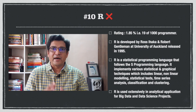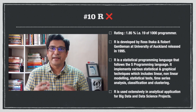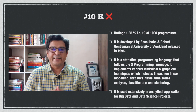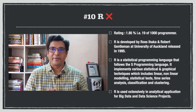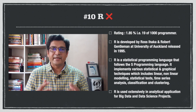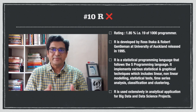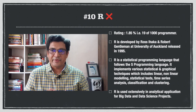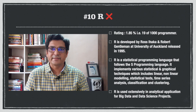At number 10 is R, developed by Ross Ihaka and Robert Gentleman at the University of Auckland, released in 1995. R is a statistical programming language that follows the S programming language and implements various statistical and graphical techniques including linear and non-linear modeling, statistical tests, time series analysis, classification, and clustering. R is used extensively in analytical applications for big data and data science projects.